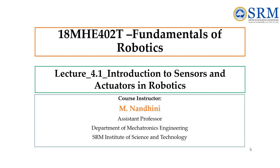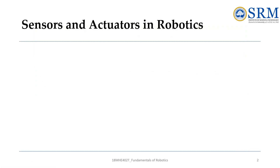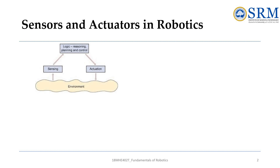In this video we will see about introduction to sensors and actuators in robotics. Any autonomous system has three fundamental aspects: sensing the environment using sensors, reasoning through logic and information processing, and interacting with the environment through actuators. Together, these are known as the sensing-logic-actuation cycle, as represented in the figure.